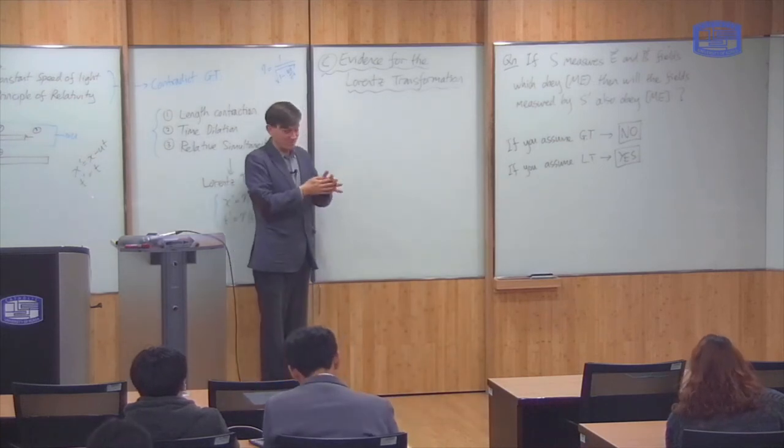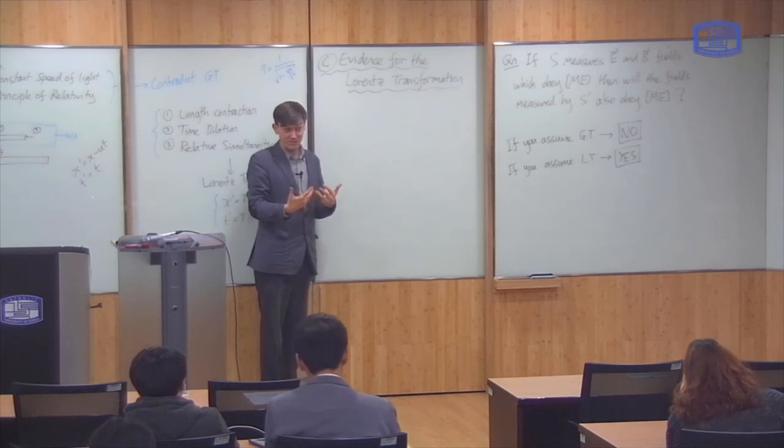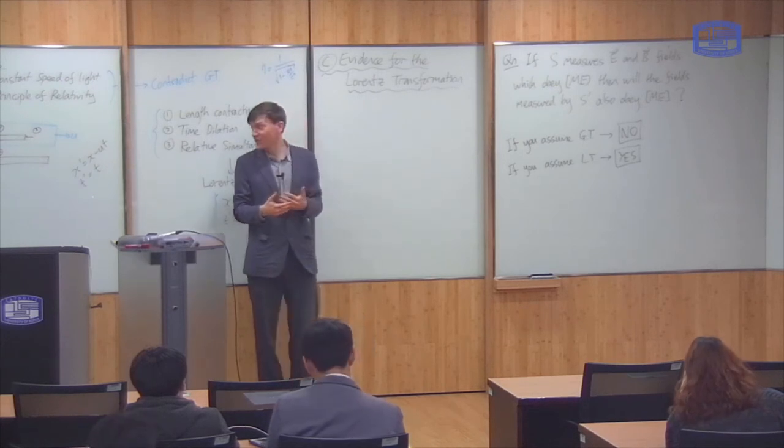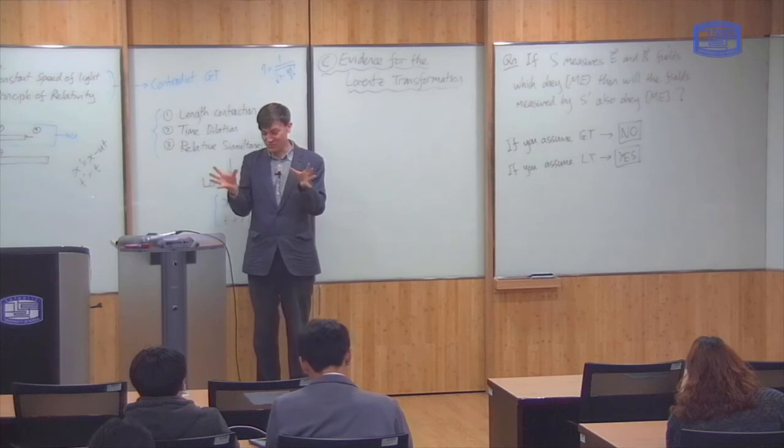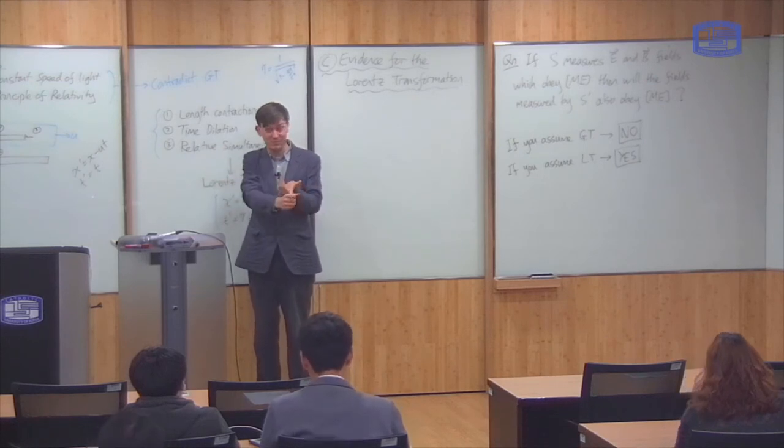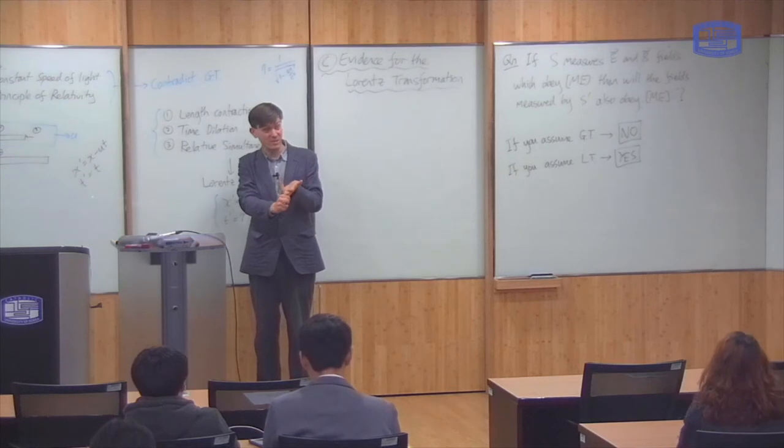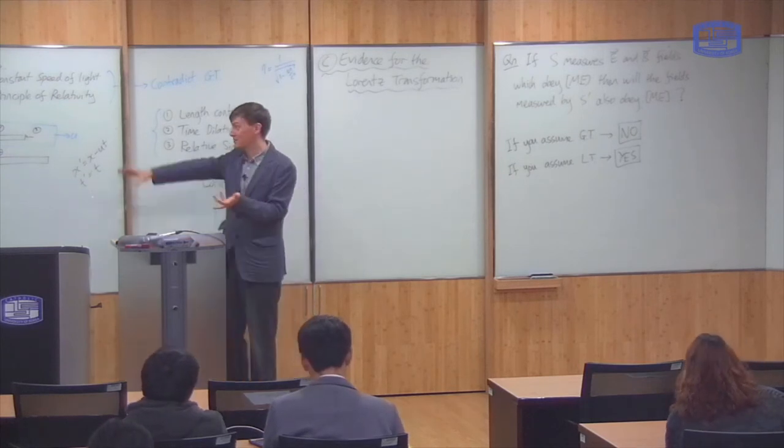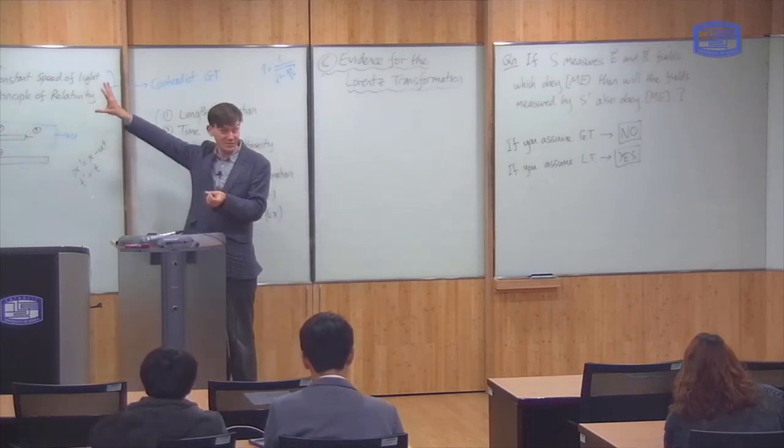So the final point I want to talk about is what evidence do we have for the Lorentz transformation? So far, as I said, the evidentiary basis is quite weak. All I've talked about is the Michelson-Morley experiment and the stellar aberration experiment. And it passes that test, so you can explain those experiments.